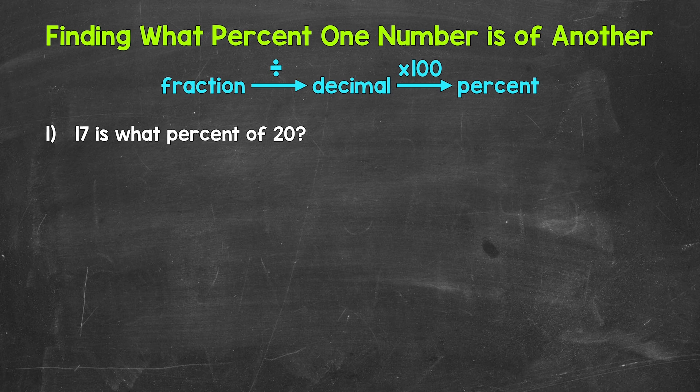Let's jump into number one where we have: 17 is what percent of 20? We're going to divide and then multiply here. One way I like to set these up is to go from a fraction to a decimal to a percent. For 17 is what percent of 20, let's think of this as 17 out of 20 — like a score on a quiz. We got 17 questions out of 20 correct. So what percent is that?